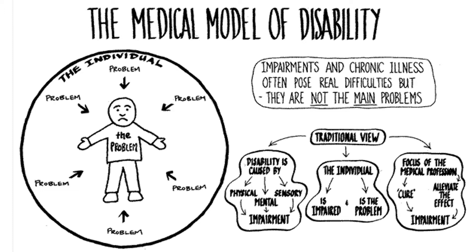Within the medical deficit model, the view is that the person is the problem and that it is therefore the person who needs fixing to fit in with everyone else. The aim is that the learner must be fixed to fit into the education system or the classroom. This resulted in the exclusion of many learners from education and was the underlying theory for a separate special schooling system for those children who did not fit into the norm.